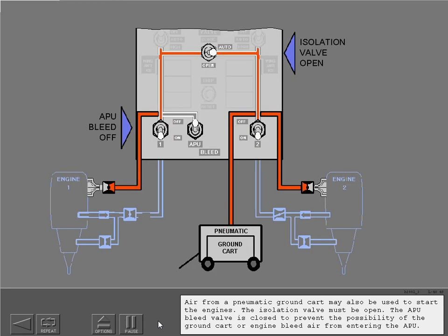Air from a pneumatic ground cart may also be used to start the engines. The isolation valve must be open. The APU bleed valve is closed to prevent the possibility of the ground cart or engine bleed air from entering the APU.